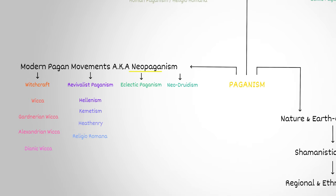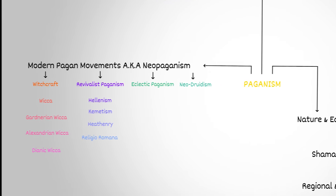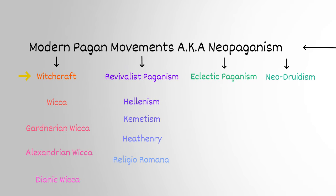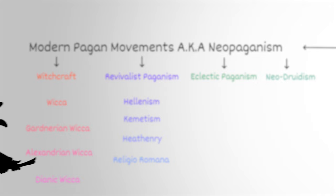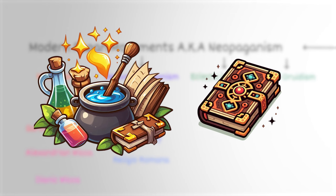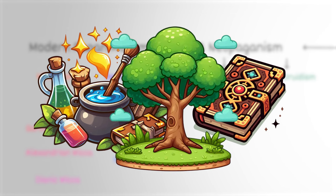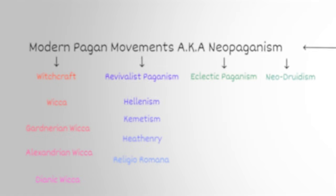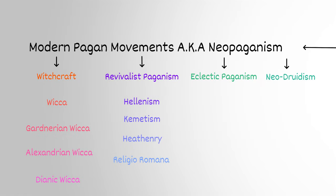Now let's move on to modern Pagan movements that have grown in recent years — this is known as Neopaganism. Witchcraft is one of the most prominent types of all the Neopagan movements. It isn't about witches with pointy hats riding on brooms, but rather about practicing rituals, casting spells, and connecting deeply with nature, using natural energies and elements to bring about change and personal empowerment.